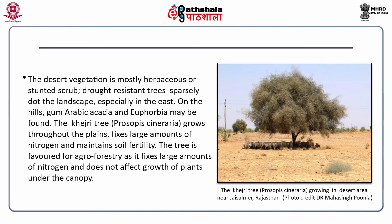The desert vegetation is mostly herbaceous or stunted scrub. Drought-resistant trees dot the landscape especially in the east. On the hills, gum arabic, acacia and euphorbia may be found. The khejri tree, with scientific name Prosopis cineraria, grows throughout the plains, fixes large amounts of nitrogen and maintains soil fertility. It is favored for agroforestry as it does not exhibit allelopathic effects on other plants growing in its vicinity.